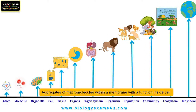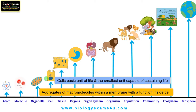Chloroplast is involved in photosynthesis, and so on. The next level of organization is the basic unit of life, which is called the cell. The cell is capable of carrying out all the basic functions of life like growth and reproduction. It is the smallest unit capable of sustaining life.